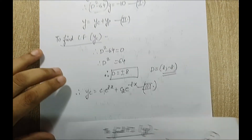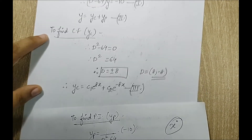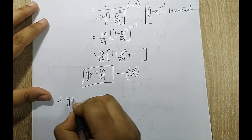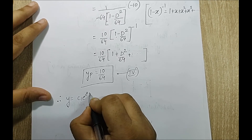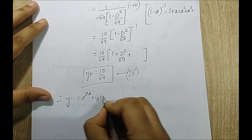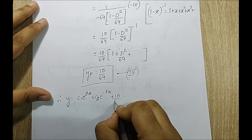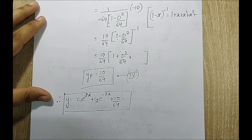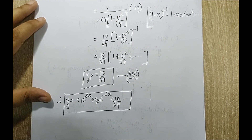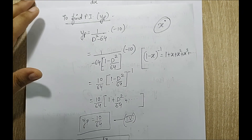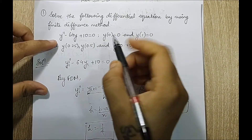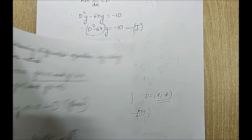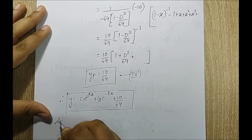Substituting equations 3 and 4 into equation 2, the general solution is: y equals c1·e^(8x) plus c2·e^(−8x) plus 10/64. I mark this as equation 5. To calculate c1 and c2, I apply the boundary conditions from the original question: y(0) equals 0 and y(1) equals 0.